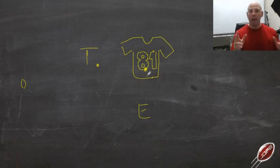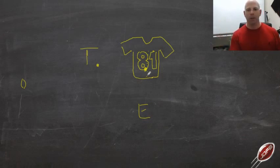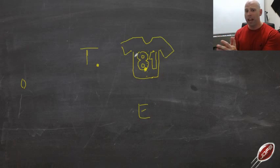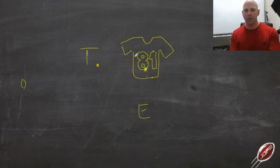Why the inside strike point? Because our main responsibility is still to be the C-gap defender. My main job is still C-gap, so no matter what I do, I'm a little more inside conscious. I tell them the strike point is the inside half or inside corner of the inside number. Do I think it gives a huge advantage by striking an inch over? No, but I want them to know they're still inside-conscious first.